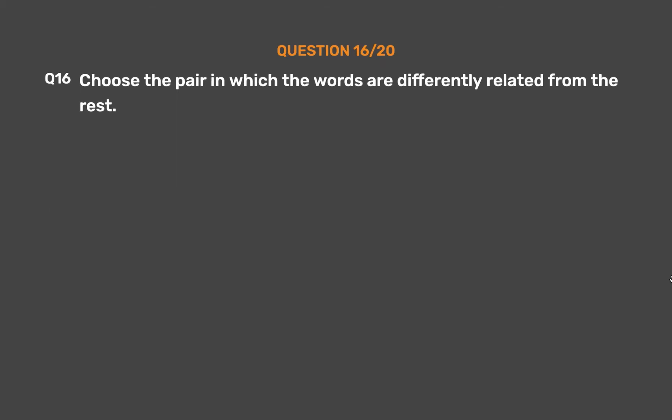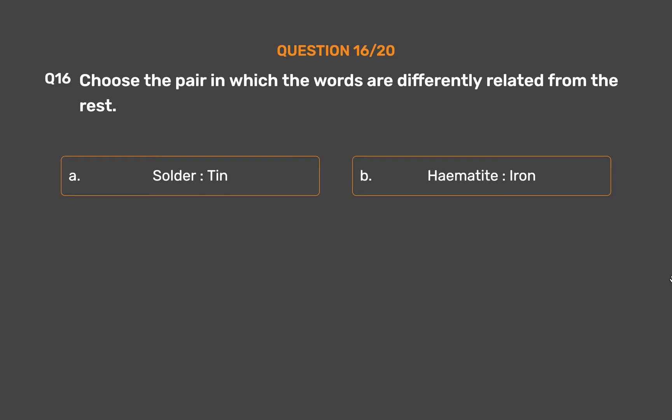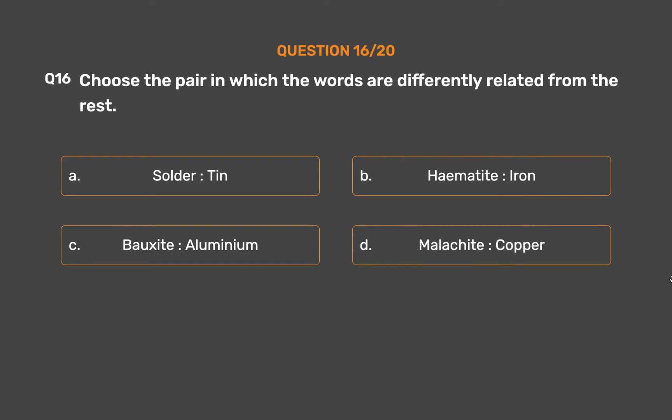Question number 16. Choose the pair in which the words are differently related from the rest. Option A: Solder, Tin. Option B: Hematite, Iron. Option C: Bauxite, Aluminium. Option D: Malachite, Copper.